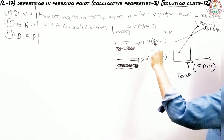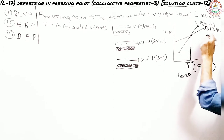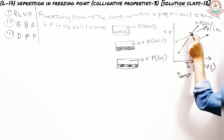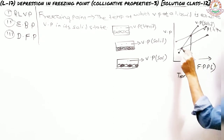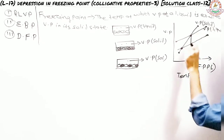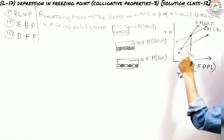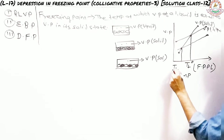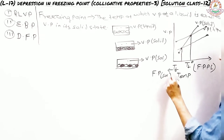If you further decrease the temperature, the solution's vapor pressure graph will continue downward. The vapor pressure of the solution is again equal to the vapor pressure of the solid at a lower temperature. This is the point at which the temperature is called the freezing point of the solution — represented as Tf. So Tf represents the freezing point of the solution. This is how you draw the graph for change in freezing point for a liquid in its pure state, in solid state, and in solution form.